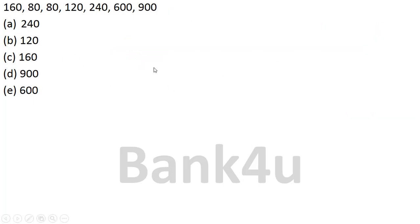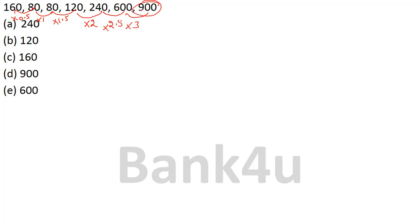The next question: 160, 80, 80, 120, 240, 600, 900. This one is very easy. 160 into 0.5 is 80. 80 into 1 is 80. 80 into 1.5: 80 plus 40 is 120. 120 into 2 is 240. 240 into 2.5: 480 plus 120 is 600. The multipliers are 0.5, 1, 1.5, 2, 2.5 — the next has to be 3. So 600 into 3 is 1800. But this number is 900, which is wrong. Therefore our answer is option D.